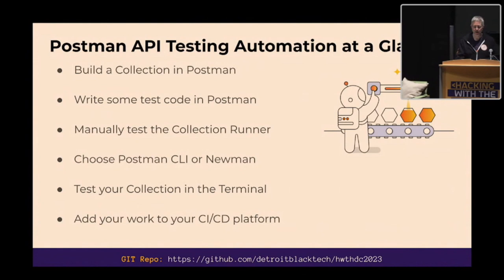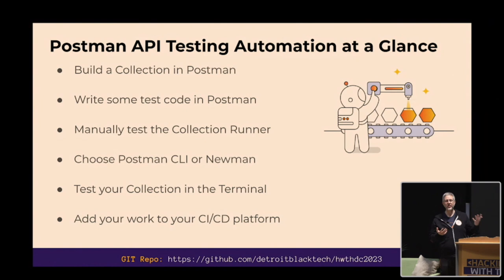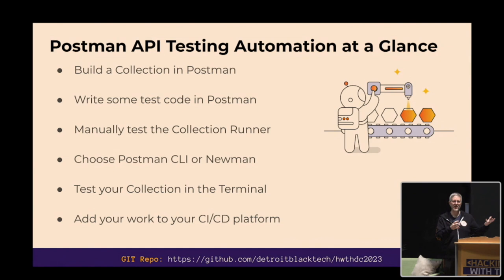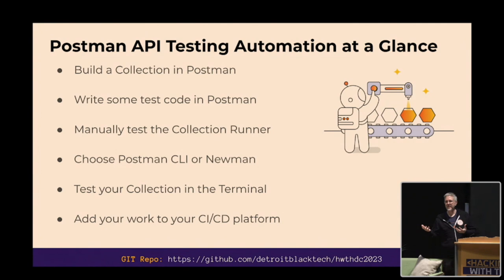So, automation at a glance: most people using Postman build what we call a collection — a collection of all the different types of requests you could make to an API, organized together. For each of those requests, you can write test code asking: when I send that request and get a response back, what can I do with it? Can I make sure it stays within a particular format? Maybe you need to do some setup ahead of time — authenticate or crunch some data. Once you write that test code, you can use our collection runner to manually run those tests, but today we'll learn how to automate that so you're not clicking a button every time.